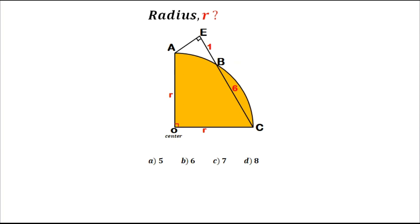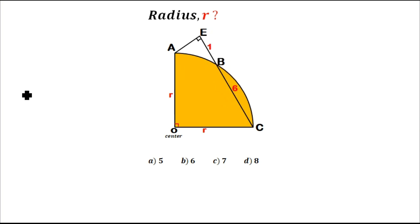Hello viewers, welcome back to our channel. In this problem you've been told to determine the radius R. You've been given a diagram where the length from B to C is 6 and from E to B is 1. I want to start by demonstrating the simplest trick on how to determine the radius of this quadrant R.